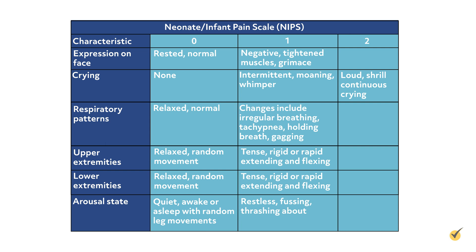With the NIPS tool, the five characteristics that are scored include the expression on the infant's face, crying, respiratory patterns, movements of the upper and lower extremities, and the arousal state. Five characteristics are scored zero to one, and crying is scored on a scale of zero to two.